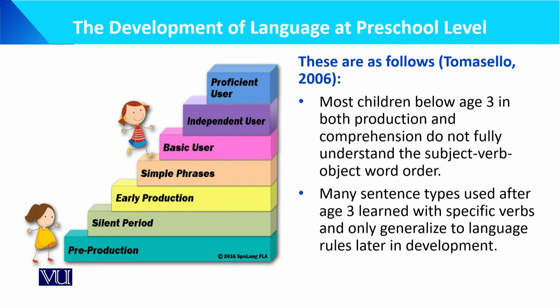Many sentence types used after age 3 are learned with specific verbs and only generalized to language rules later in development. If we look at this picture showing language development stages: pre-production, sounds production, words production, silent period, early production, simple phrases, child as basic user, independent user, and proficient user.